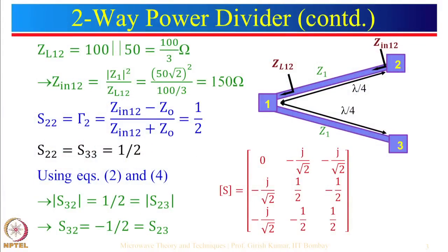In the previous lecture, we discussed power dividers and combiners. We started with the two-way equal power divider and derived its S-matrix. We saw that this is a good power divider but not a good power combiner, because if we give an input at port 2, then one fourth of the power reflects back, one fourth goes to port 3, and half power goes to port 1.